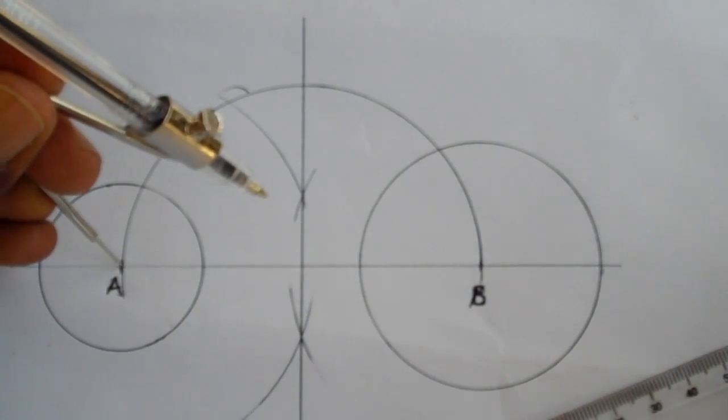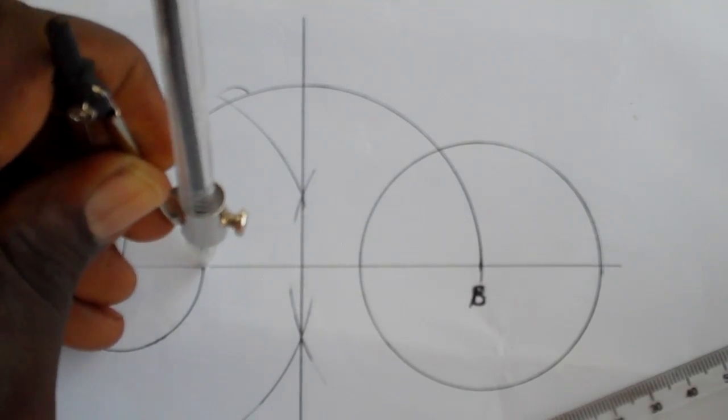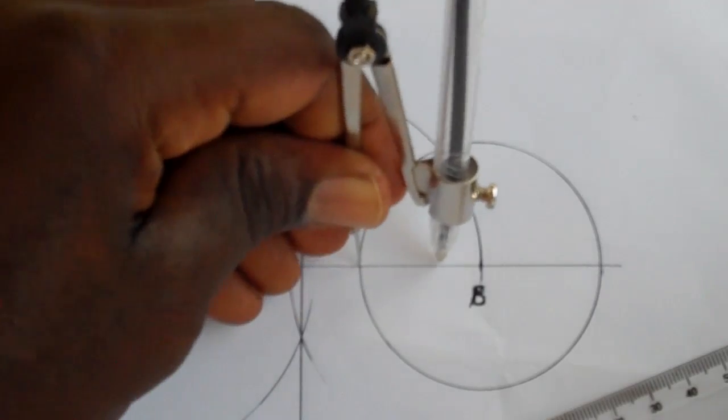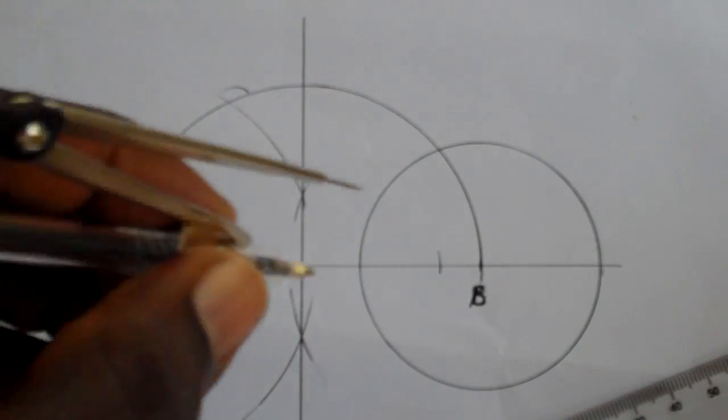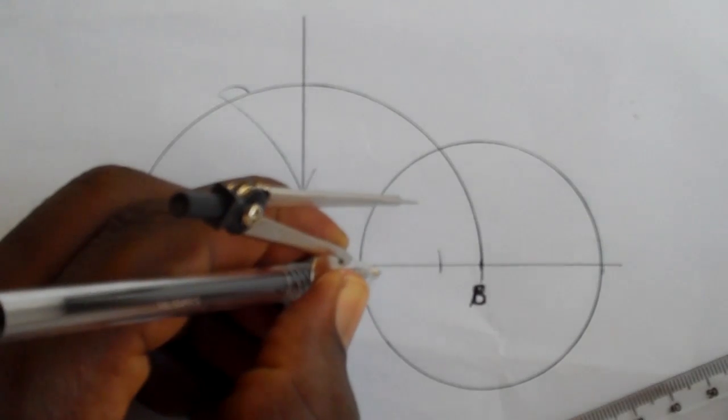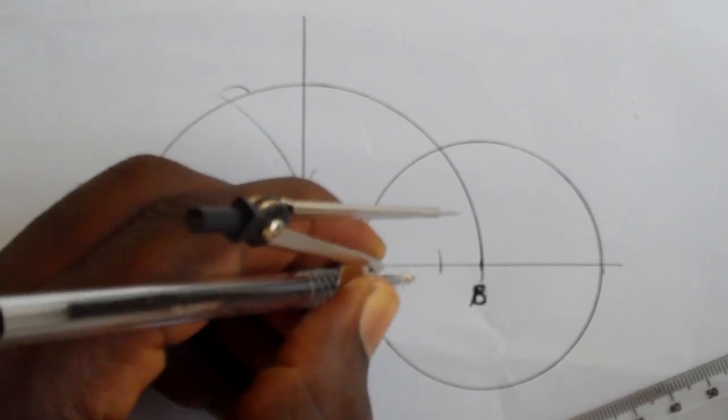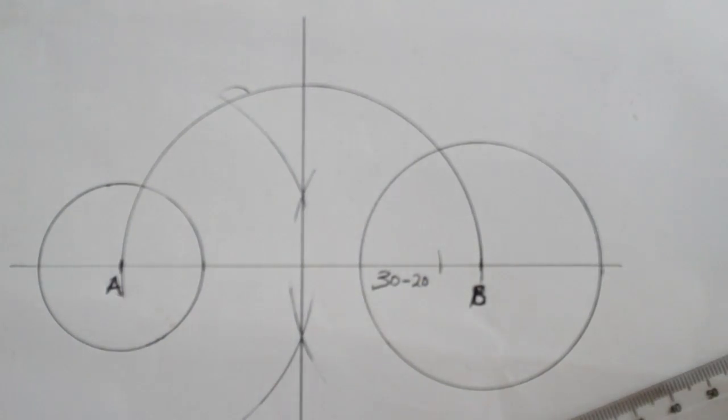After you do that, at the center B, you construct a circle which is equal to the difference between the two radii. In this case, we have 30 millimeters and 20 millimeters. So you're going to draw a circle at the center B whose radius is equal to the difference of the two radii.